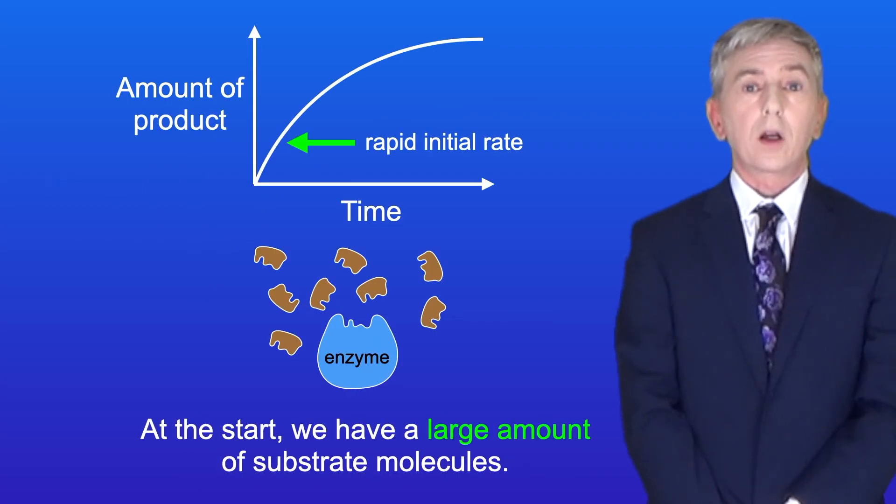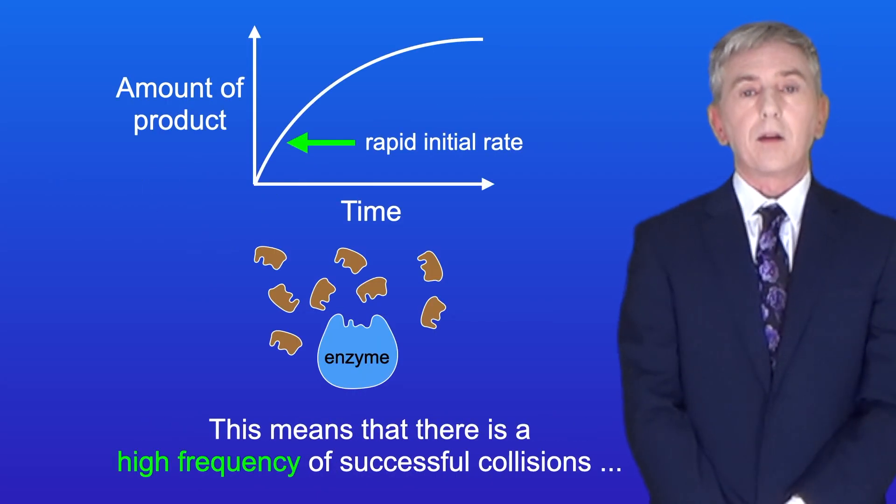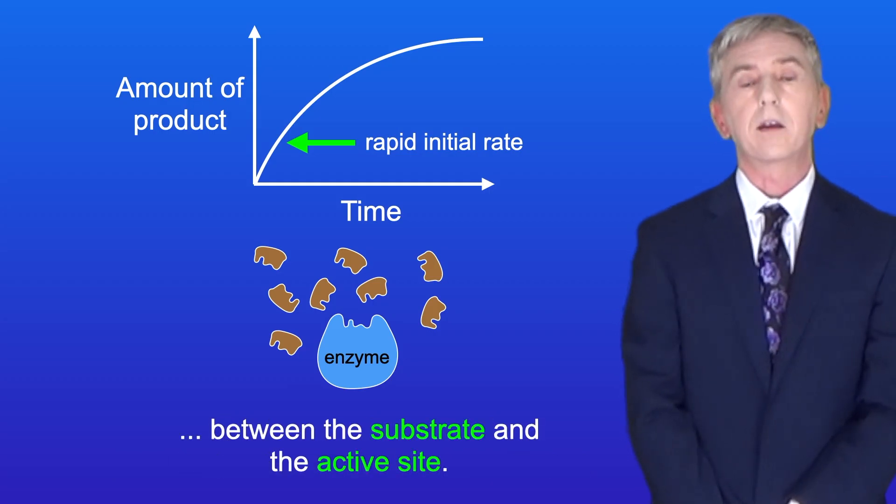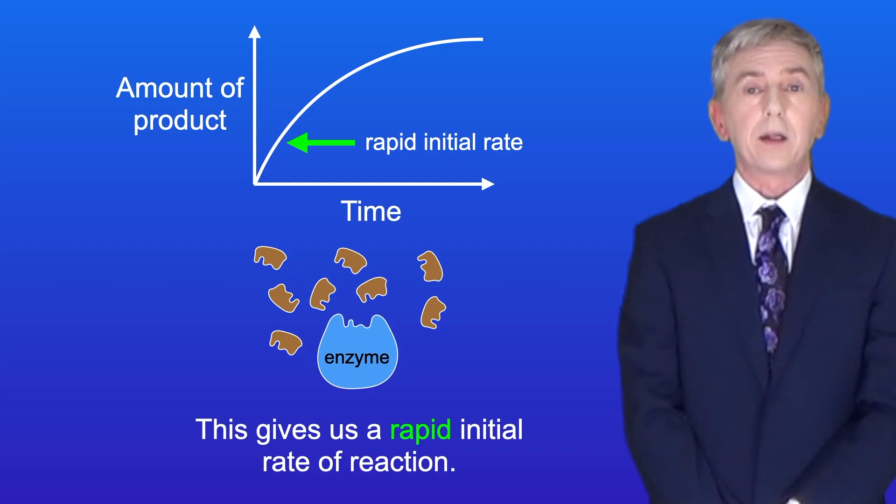At the start we've got a large amount of substrate molecules. This means that there's a high frequency of successful collisions between the substrate and the active site. This gives us a rapid initial rate of reaction.